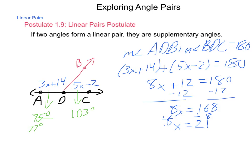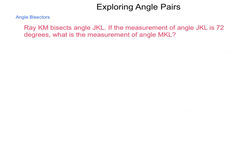So one other concept we need to look at here real quick is that of an angle bisector. Bisector cuts a line in half. An angle bisector will cut the measurements of that angle in half. So we have ray KM that bisects angle JKL. The measurement of angle JKL is 72 degrees. What is the measurement of angle MKL?